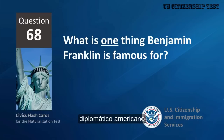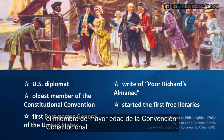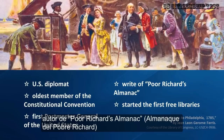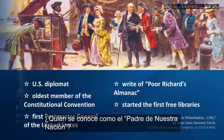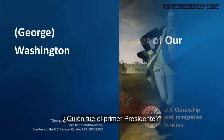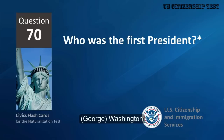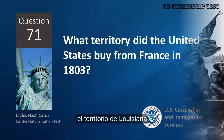What is one thing Benjamin Franklin is famous for? U.S. Diplomat, oldest member of the Constitutional Convention, First Postmaster General of the United States, writer of Poor Richard's Almanac, started the first free libraries. Who is the father of our country? George Washington. Who was the first president? George Washington.